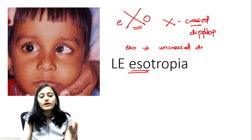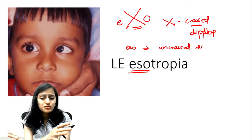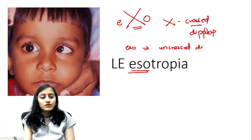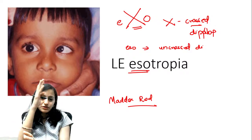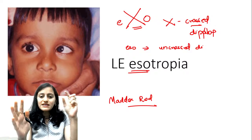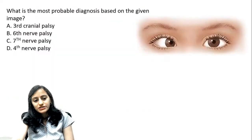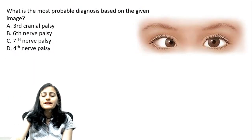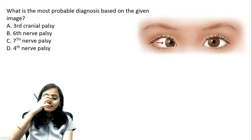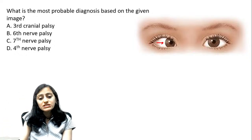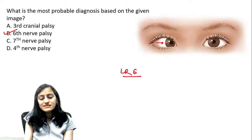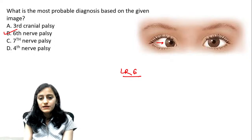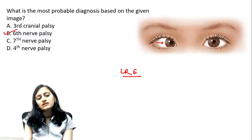In esotropia, the patient may have uncrossed diplopia. Remember: exo has crossed diplopia — 'X' is crossed. Esotropia has uncrossed diplopia. The Maddox rod test helps identify crossed vs. uncrossed diplopia — you see whether the line and dot are on the same side or crossed. Because the eyeball in this image is deviated inside (adducted), abduction is gone — lateral rectus (LR) is paralyzed — so the probable diagnosis is sixth nerve palsy.